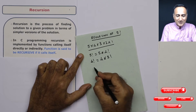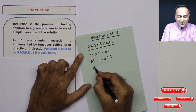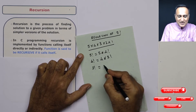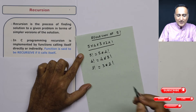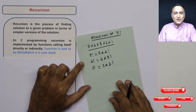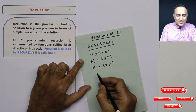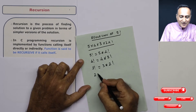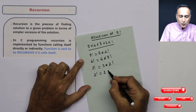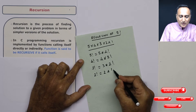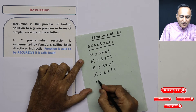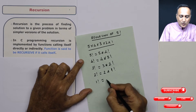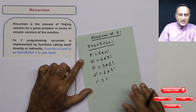Now what is 3 factorial? 3 factorial is 3 × 2 factorial. Now what is 1 factorial? 1 factorial is 1.